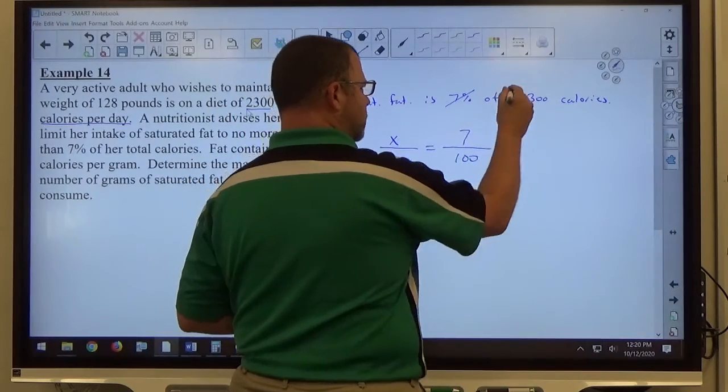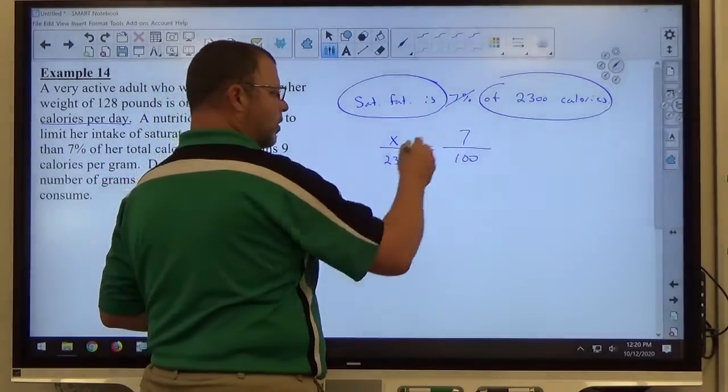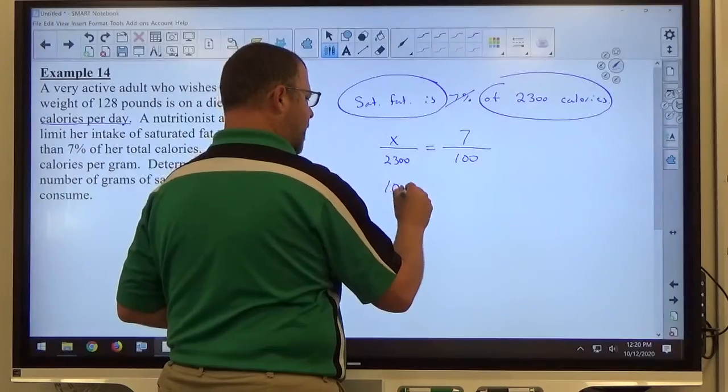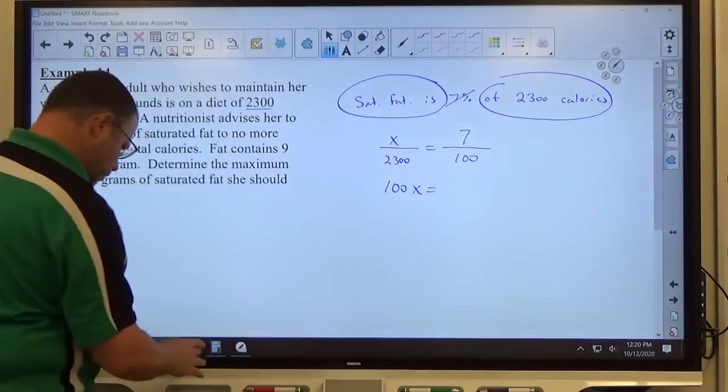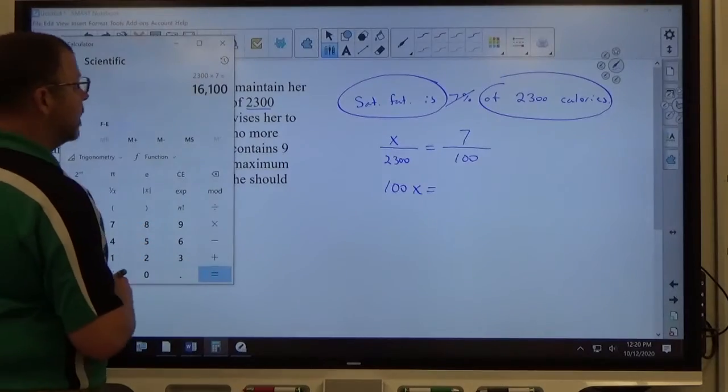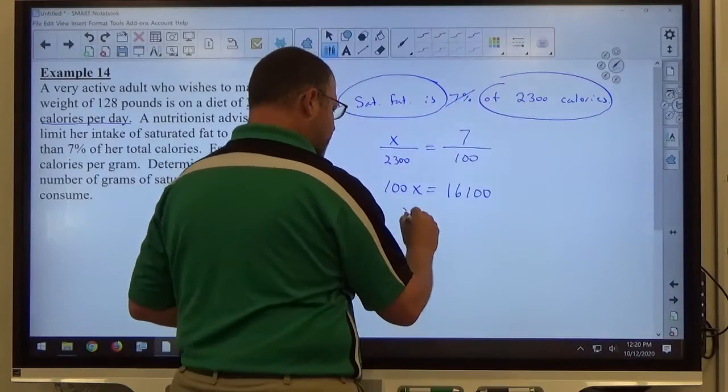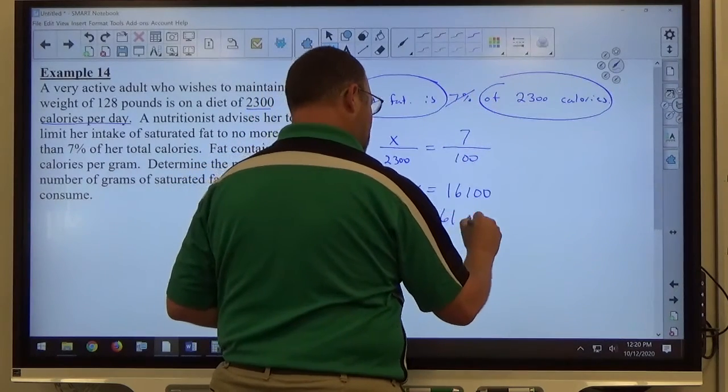I'm going to cross-multiply, and we get 100 times X equals 2300 times 7, which is 16,100. If I divide both sides by 100, we get X equals 161 calories.